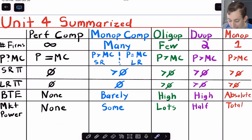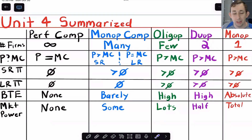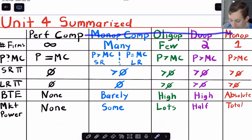So you can see as we go from perfect competition to monopoly, the number of firms in this market is going from infinite to one. We're going to have fewer and fewer firms as we move in this direction.